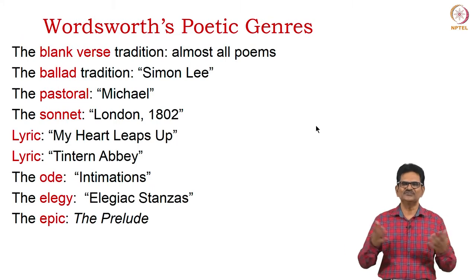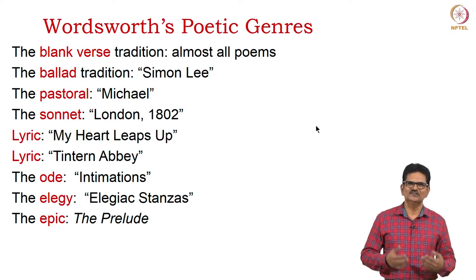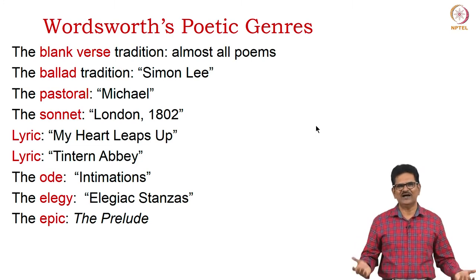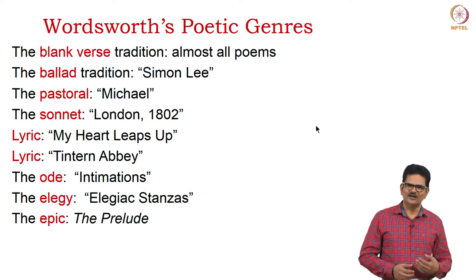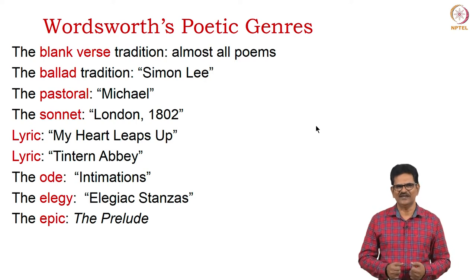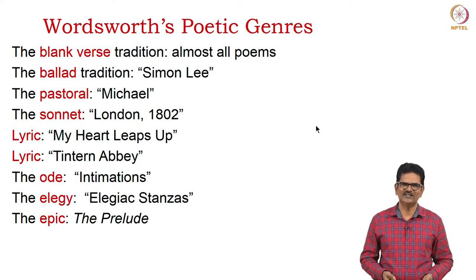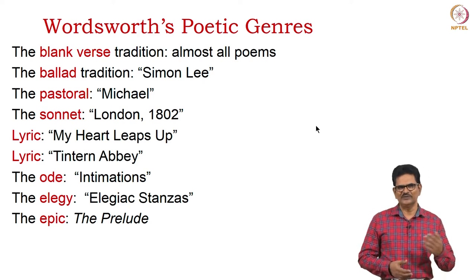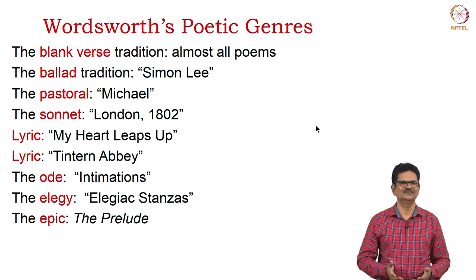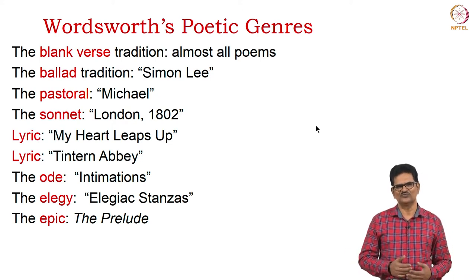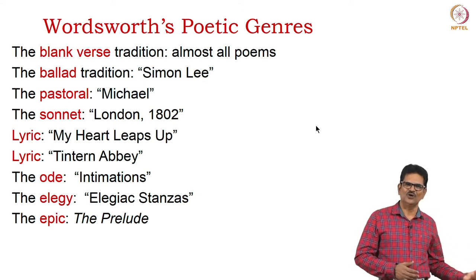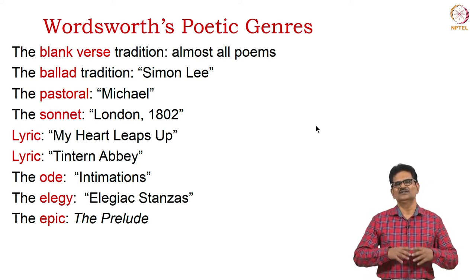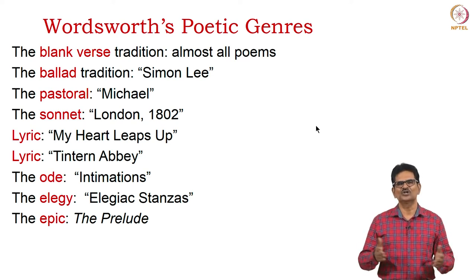Wordsworth experimented with different kinds of poetic forms. He used blank verse in most of his poems and drew on the ballad tradition — one example is Simon Lee. He wrote from a pastoral setting as in Michael, and experimented with the sonnet form as in London, 1802. Many of his poems are lyrical, such as My Heart Leaps Up and Tintern Abbey. He also worked with the ode form in Intimations of Immortality, tried elegy in elegiac stanzas, and lastly produced The Prelude — one of the most innovative epics in English, an autobiographical epic.